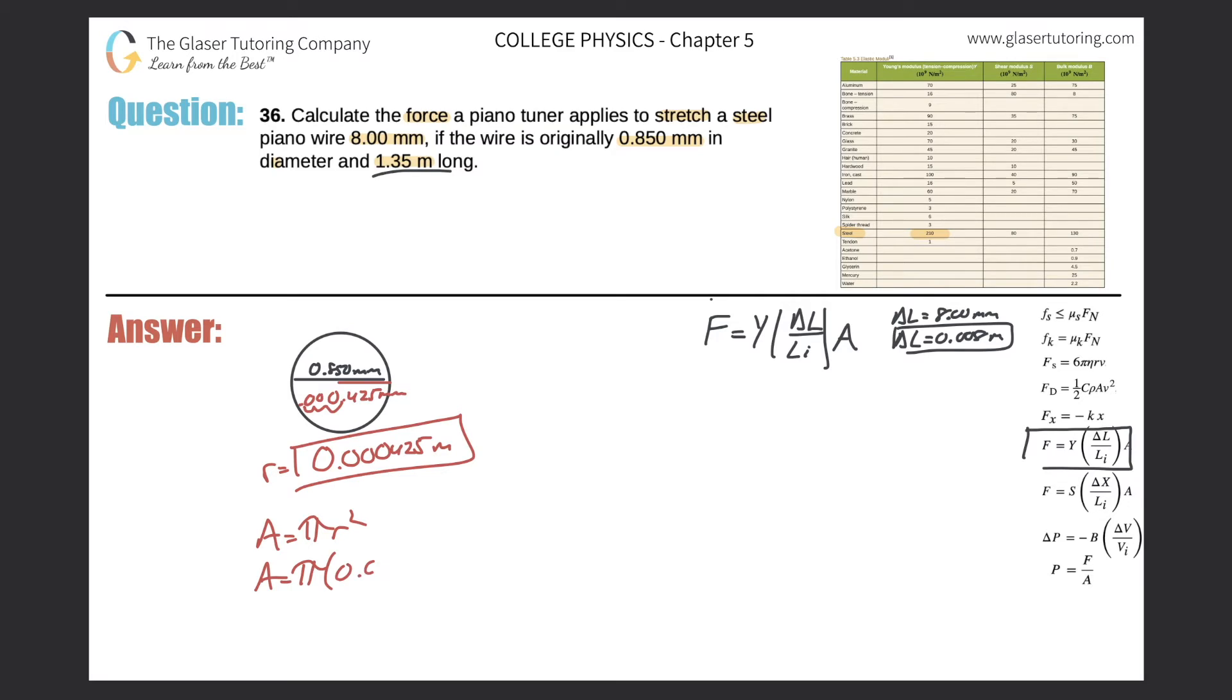So plug in now the radius here. 0.000425 and square that. And now I get the cross-sectional area being equal to pi times 0.000425 squared. And it works out to be 5.67 times 10 to the minus 7, right? Meters squared. So this is now my A value over here.